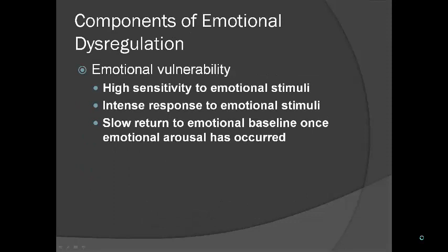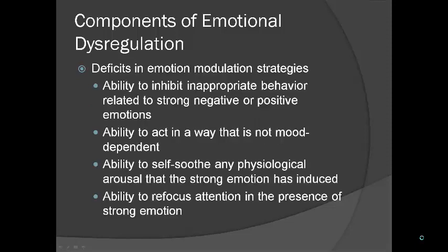The components of emotional dysregulation include emotional vulnerability, high sensitivity to emotional stimuli, intense response to emotional stimuli, and being slow to return to baseline once emotional arousal has occurred. This is like people with short fuses — people with BPD may have extreme tempers, but it also refers to sadness. When they feel very sad, self-harm and suicide are very much at the forefront because these are intense emotions. Whatever emotion they're feeling, even a positive one, the emotion is very intense, rises very quickly, and is hard to bring back to baseline.